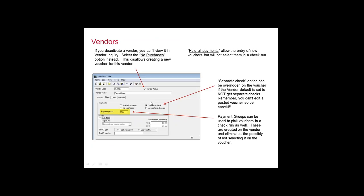Let's move on to the actual vendor setup — just a few tips and tricks. Setting up a vendor is pretty basic: put in your vendor code, your vendor name, and check whether it's active or not. If you have a vendor you're not going to utilize anymore, you can deactivate it. But when you do that, it keeps you from looking at that vendor's history in vendor inquiry. Instead, use the 'No Purchases' option on the vendor — this keeps the AP person from selecting it on an AP voucher, but you can still look it up in vendor inquiry.